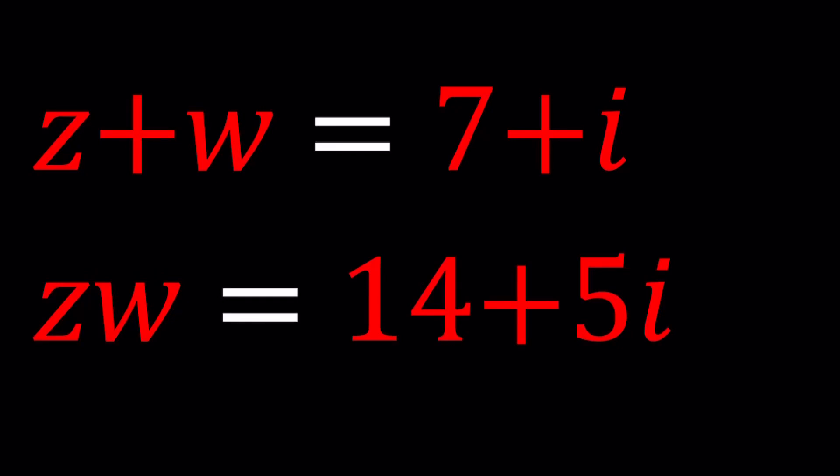Hello everyone, welcome to A plus PI. This channel is all about complex numbers and in this video we're going to be solving a system of equations. Z plus W equals 7 plus I and Z times W equals 14 plus 5I.